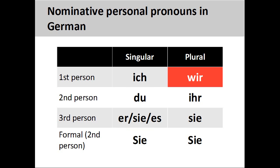We can also apply the concept of actors on the stage to the plural personal pronouns. The first group of actors to appear on the stage is wir, we — the first person plural personal pronoun. Another group of actors appears on the stage, which we would collectively address as ihr, y'all. Again, this is the informal form of address and should only be used with groups of close friends, relatives, young children, and pets.